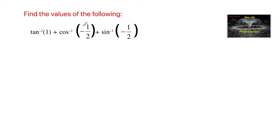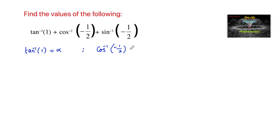Find the value of tan inverse of 1 plus cos inverse of minus 1 by 2 plus sin inverse of minus 1 by 2. Let us consider tan inverse of 1 equal to alpha, cos inverse of minus 1 by 2 equal to beta, and sin inverse of minus 1 by 2 equal to gamma.